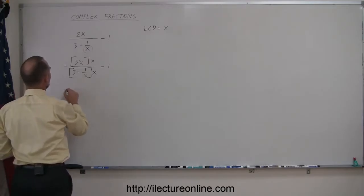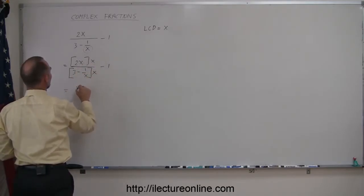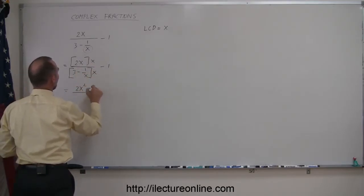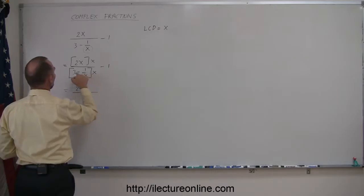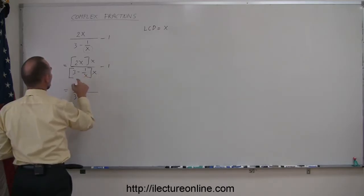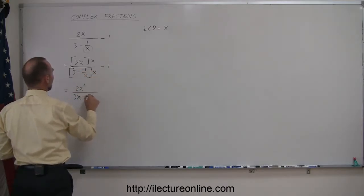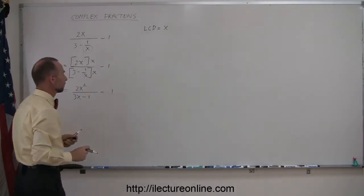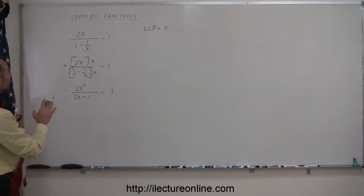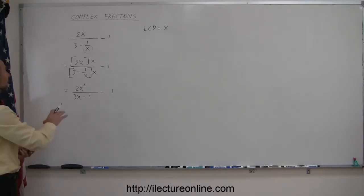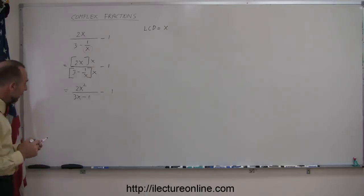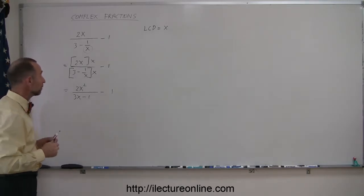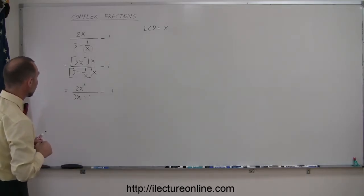I get 2x times x, which is 2x squared, divided by x times 3, which is 3x, and minus 1 over x times x — the x's cancel out and I'm left with minus 1, and then I have a minus 1 there. So now what I've done is reduced the left side a little bit, and it becomes a little bit like adding and subtracting rational expressions.